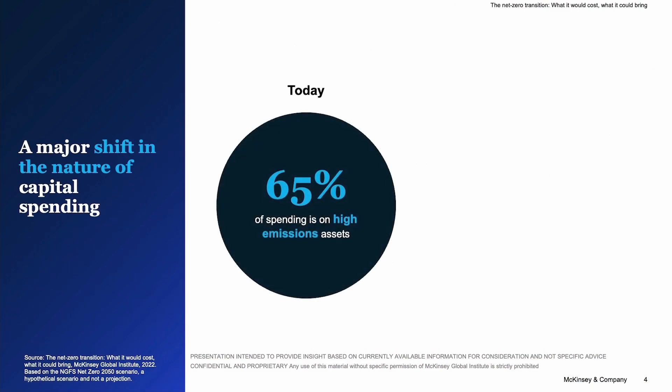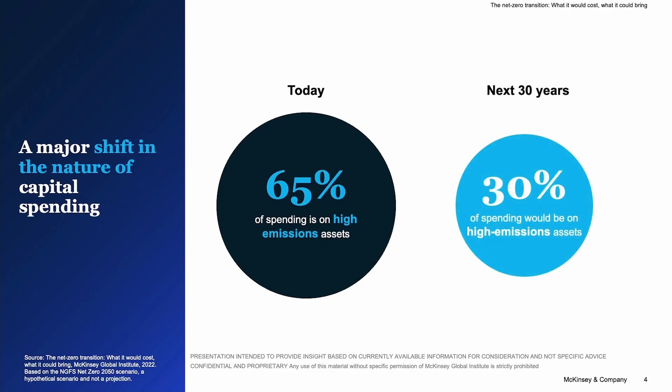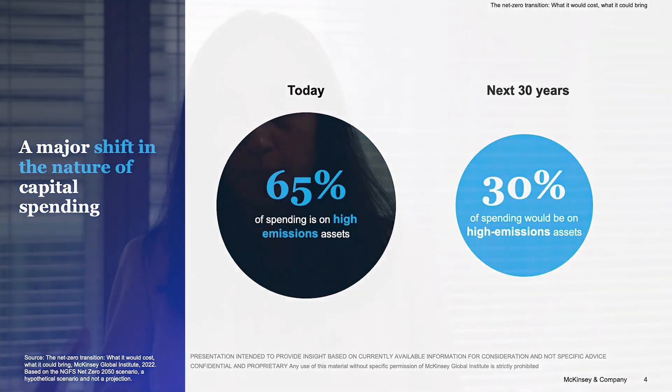But it's not just about the magnitude of capital — it's also about the type of capital we're going to deploy. Our analysis divides the assets we will be spending on into two categories. The first is high emissions assets, things like coal and gas power plants. The second is low emissions assets, things like renewable power plants or electric vehicles. Today, we spend about 65% of that $5.7 trillion on high emissions assets. In the future, that split would need to be exactly reversed. So it's not just about the scale of capital, it's also about the type.